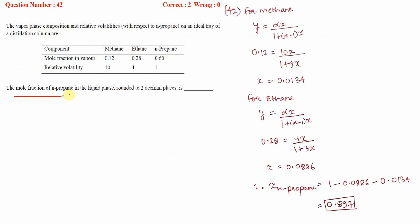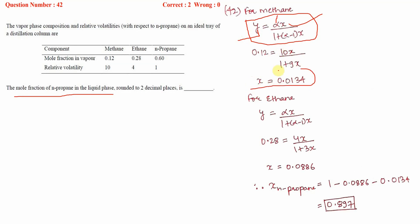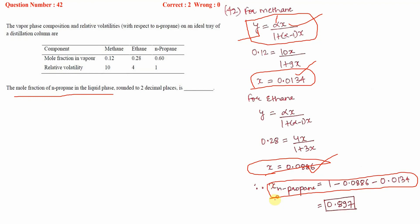The vapor phase compositions and relative volatilities for methane, ethane, and propane are given, and we need the mole fraction of n-propane in the liquid phase. Using the relative volatility relation between vapor and liquid mole fractions, we first find the liquid mole fraction of methane, then ethane, and since the sum of all mole fractions equals 1, we solve for the mole fraction of propane.